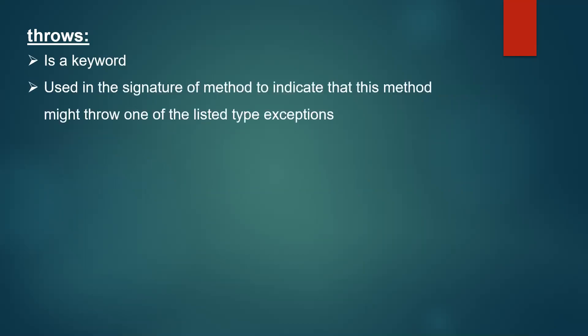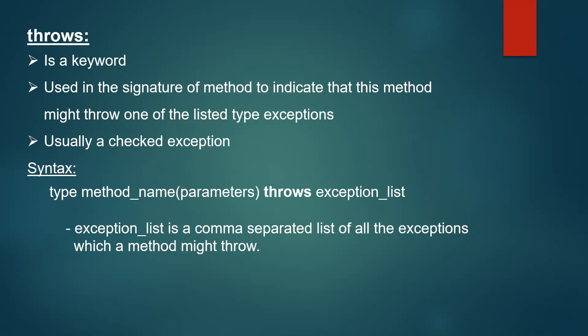Now let us understand what throws is. Throws is also a keyword and it is used in the signature of a method to indicate that this method might throw one of the listed exception types. It is like a warning or information for the calling method. The caller will know what exception the method may return. Usually this will be a checked exception. The syntax of throws appears in the method signature — return type, method name, parameters, then the throws keyword followed by a list of exceptions separated by commas.